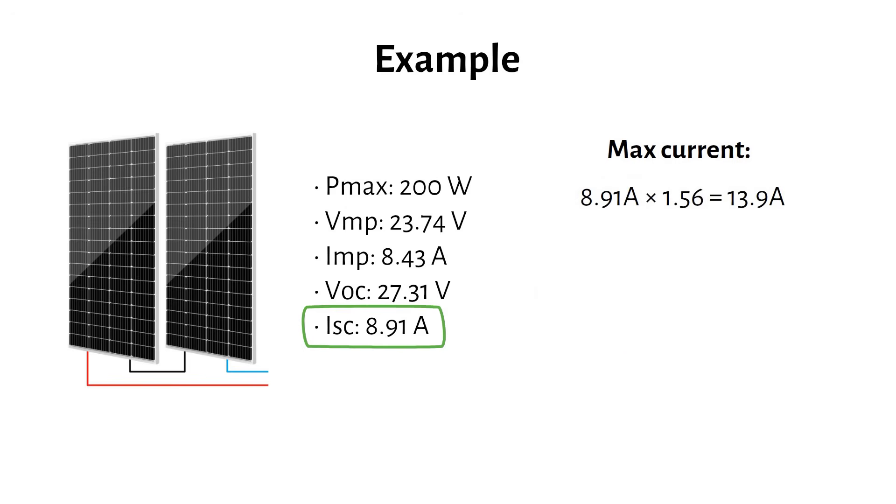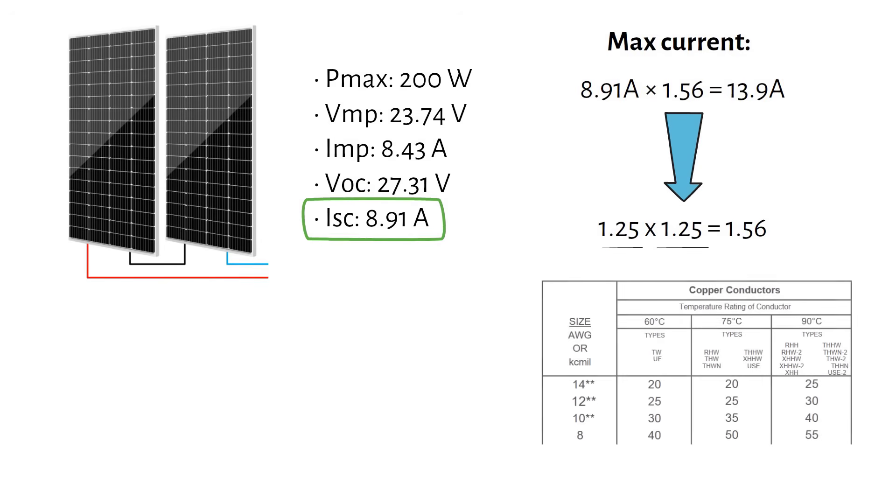That 1.56 factor is simply two safety margins stacked on top of each other. We are effectively derating the cable. The first is a standard for continuous current, and the second is for higher temperatures because the wire is exposed to direct sunshine. PV cable uses 90 degrees Celsius insulation.